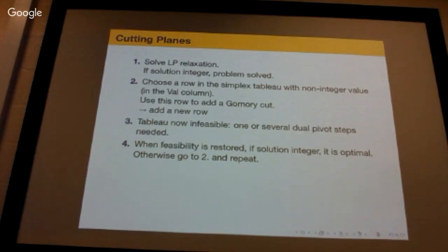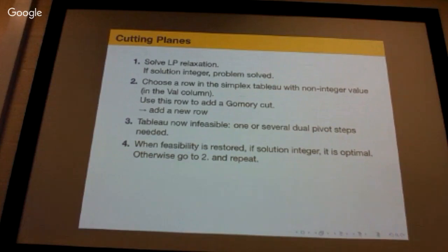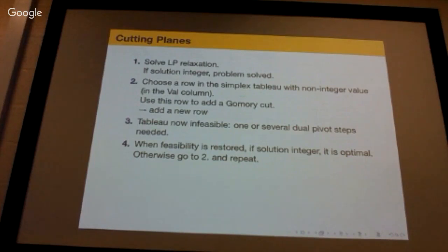That's the algorithm: solve the LP relaxation - if the solution is integer, you're done. If not, choose a row with a fractional value in the right-hand column, use that row by rounding down to get a new Gomory cut, add it to the tableau, do a dual pivot, and when you get a feasible all-integer solution you've found your answer. Keep repeating if needed. This also tells you how to approach question two on the assignment.